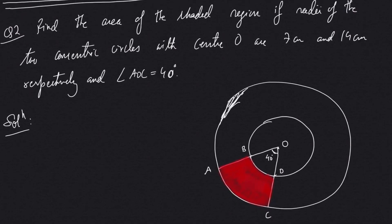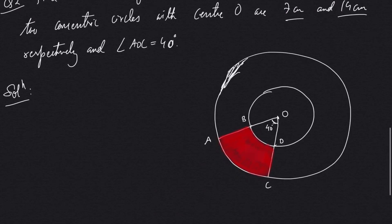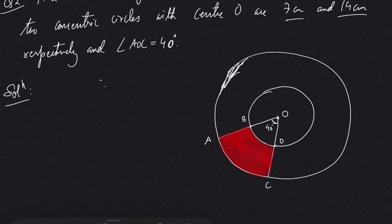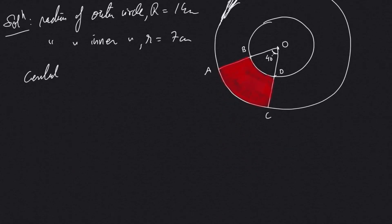Continuing with question number two: find the area of the shaded region if the radii of two concentric circles with the same center are 7 centimeters and 14 centimeters, and the central angle is 40 degrees. It's a simple question. Let the radius of the outer circle be capital R = 14 centimeters, and the radius of the inner circle be small r = 7 centimeters.